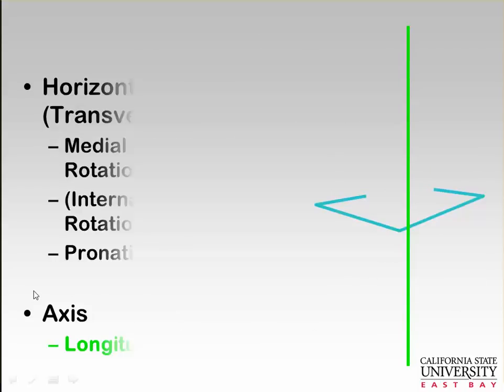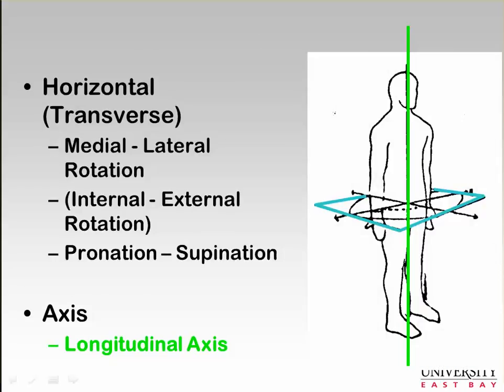Finally, we have the horizontal or transverse plane, and that is where medial or lateral rotation occurs—sometimes called internal and external rotation, or even pronation and supination. The frustrating thing in anatomy, and likewise in motion analysis and biomechanics, is there are a lot of synonyms. Different professions use different words, so you have to be aware of all of them.